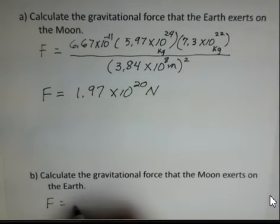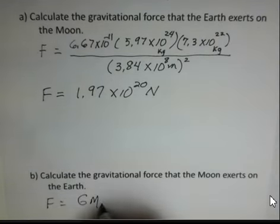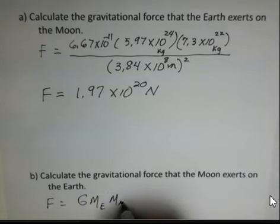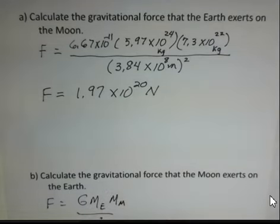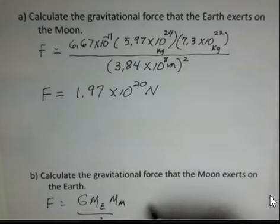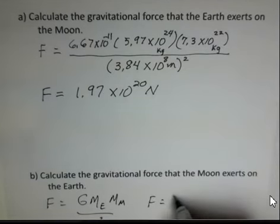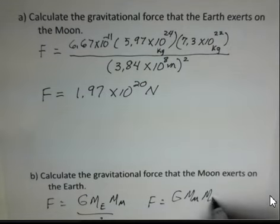How did I get done so fast? Well, this F equals G, I'll do mass of the Earth, mass of the Moon, over R squared. That's what I did in Part A. For Part B, let's do F equals G, mass of the Moon, times mass of the Earth, and divide by R squared.